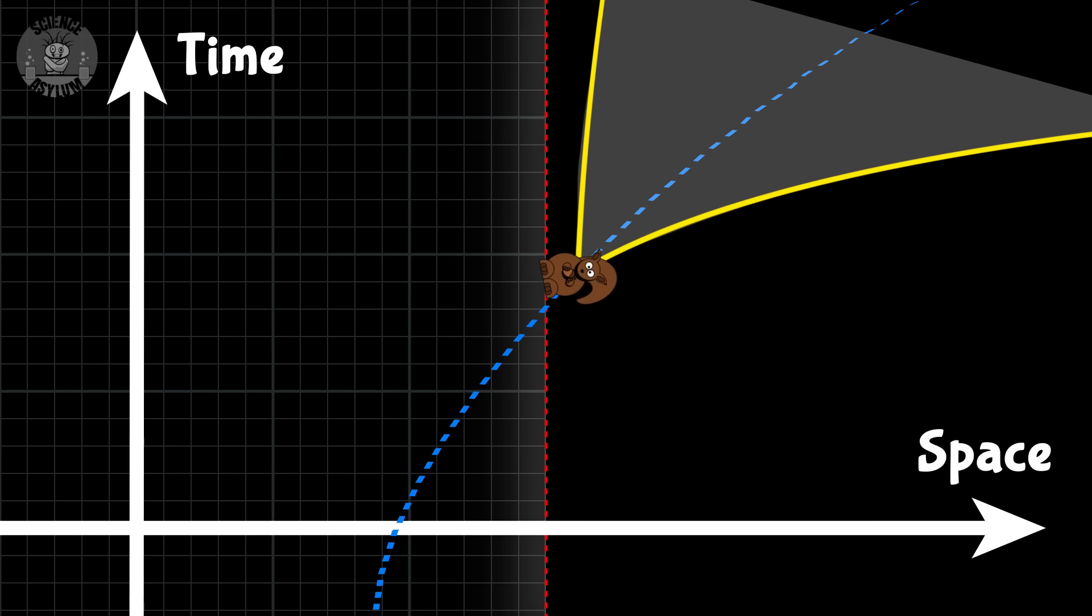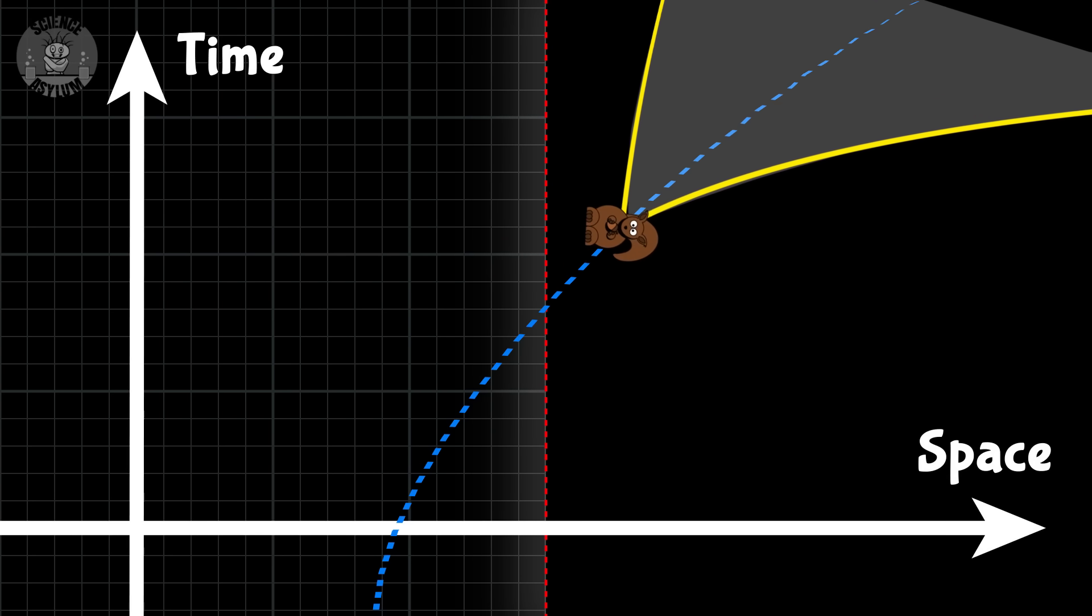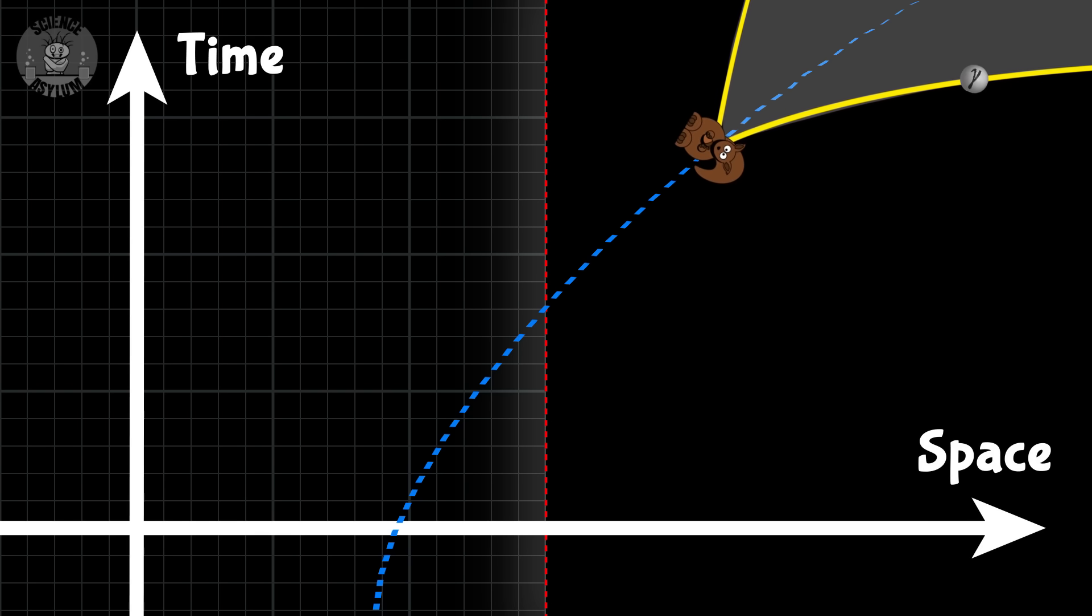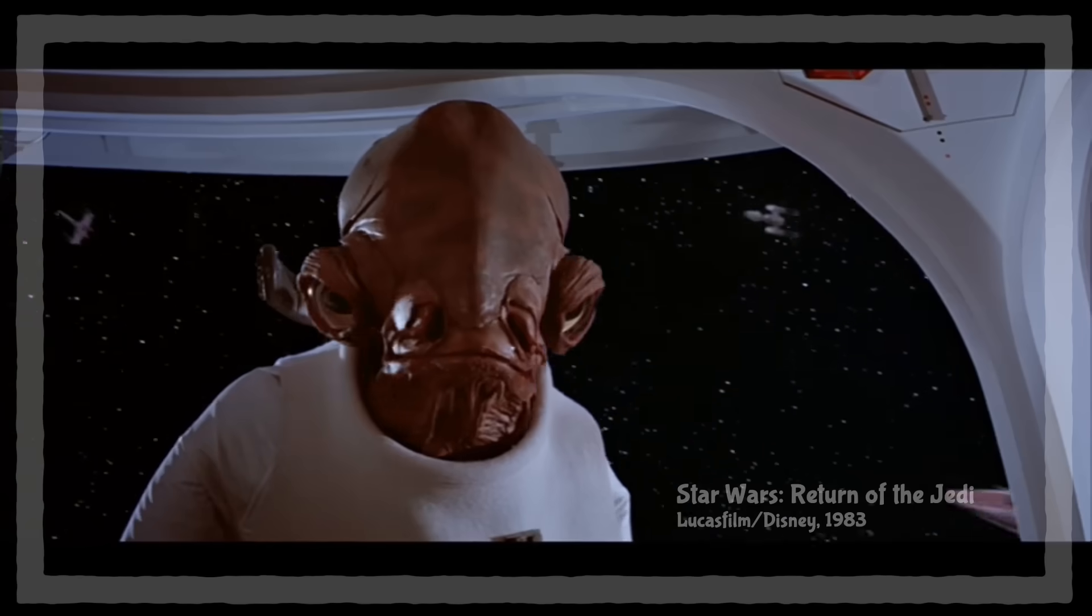Once it crosses though, all of its possible futures point inward. Even if it tries to send signals, those will also go inward, no matter the direction. It's a trap!